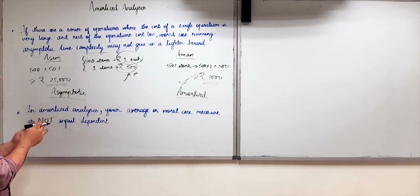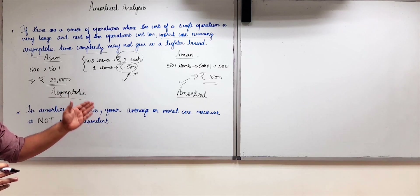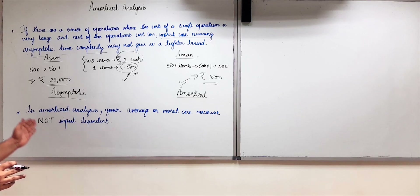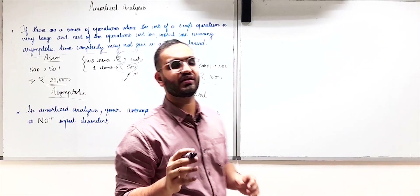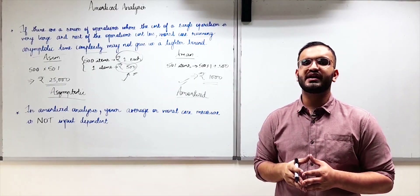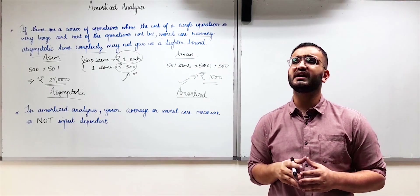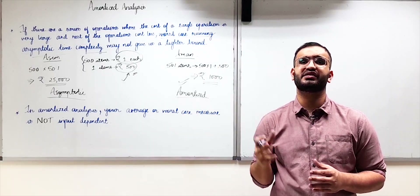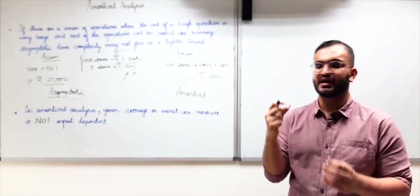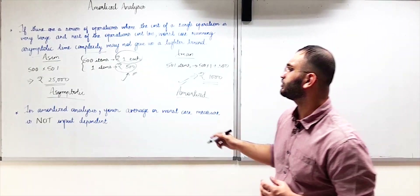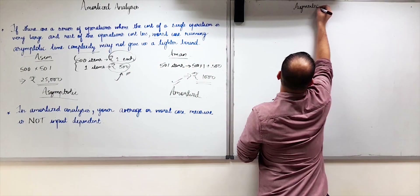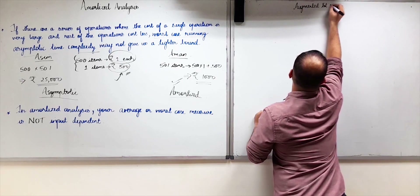Now let us look at a very important feature of amortized analysis: in amortized analysis, the average or worst-case measure is not input-dependent. In asymptotic analysis, for example with quicksort, we say the worst-case time complexity when the input is sorted is O(n²). Those input-dependent conditions are not relevant in amortized analysis.